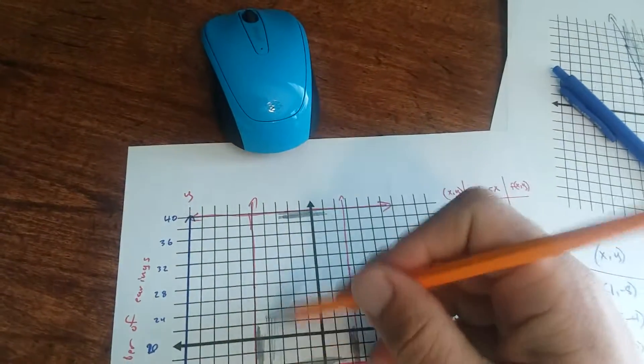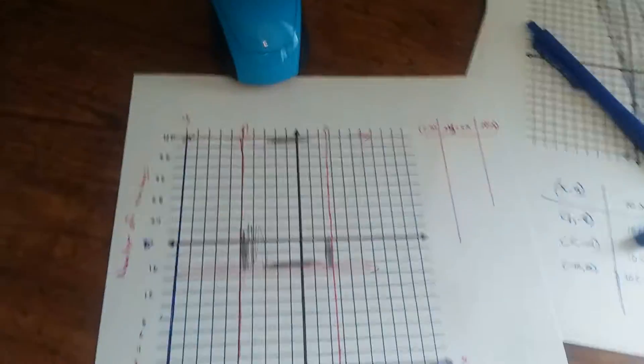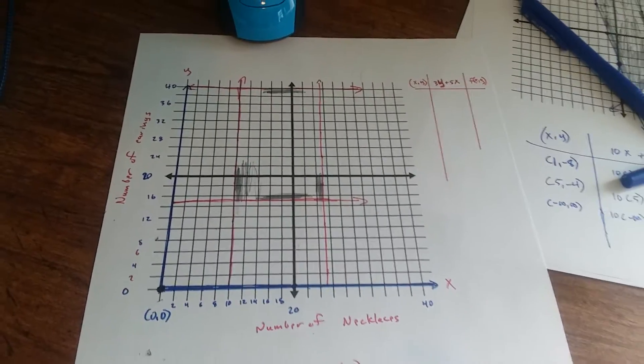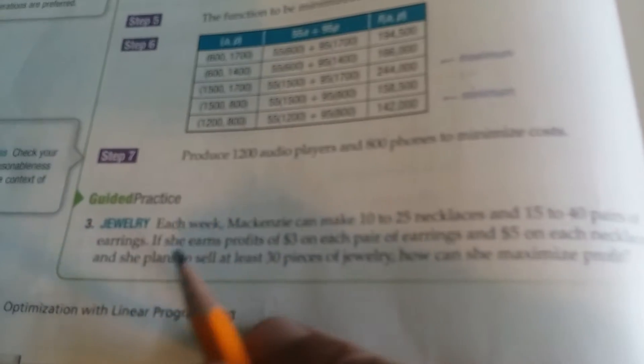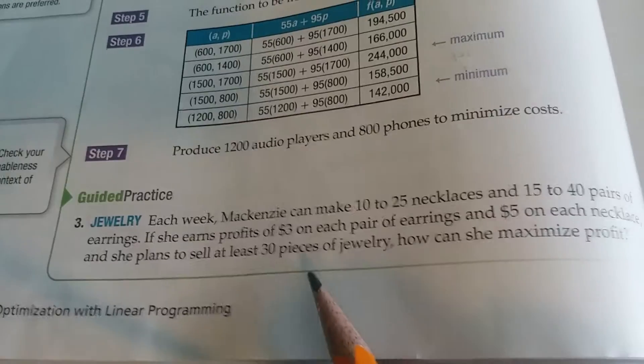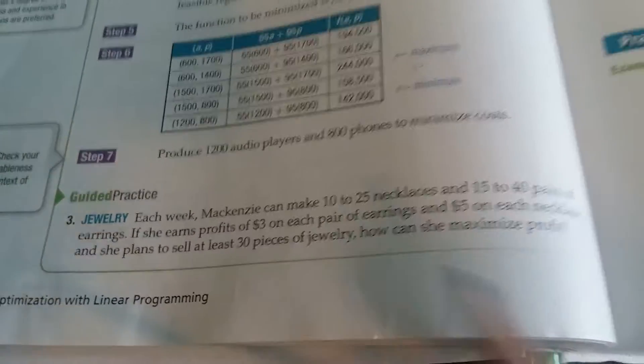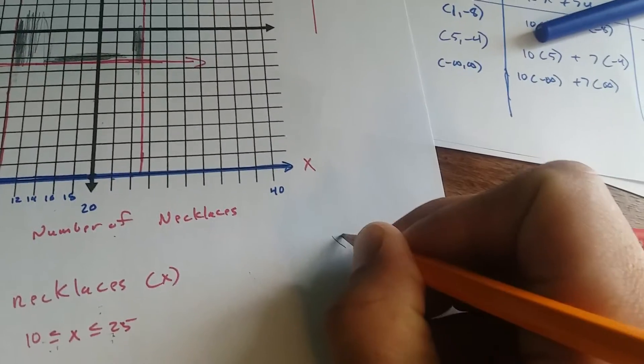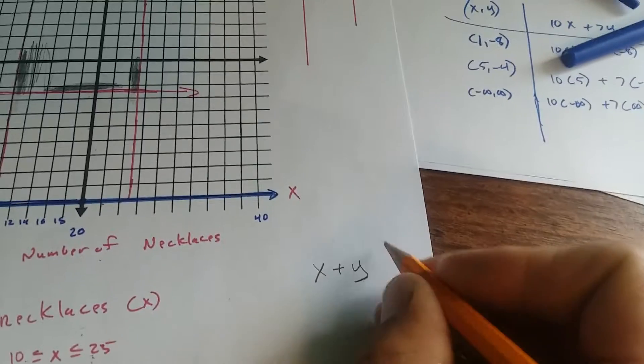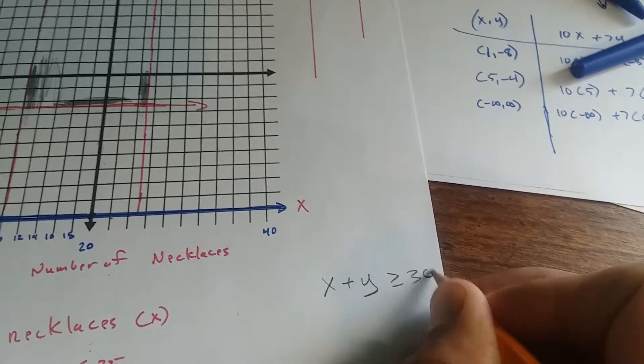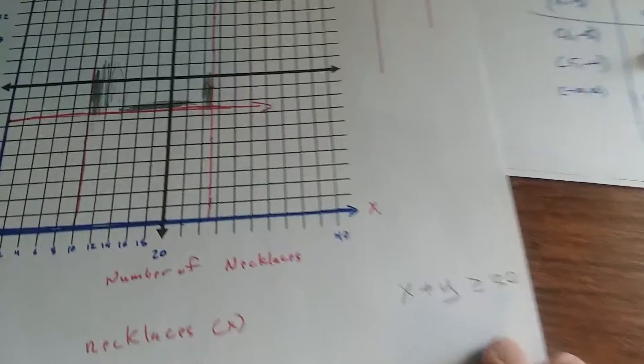So you're going to have this region. Now, there's one more inequality that we need to write. Notice that it says she plans to sell at least 30 pieces of jewelry. So that means that your number of necklaces X plus your number of earrings Y has to be greater than or equal to 30. So X plus Y is greater than or equal to 30.